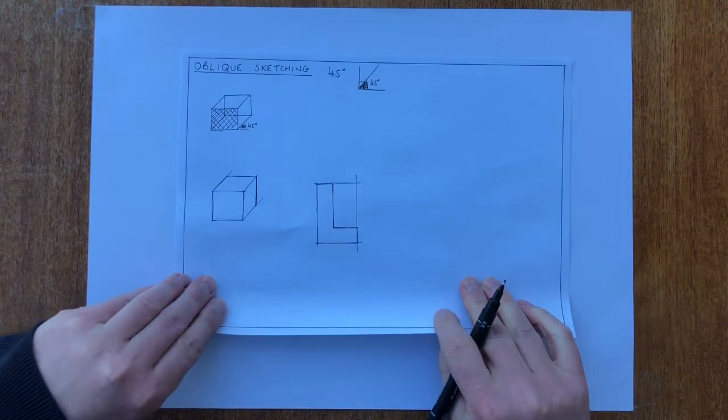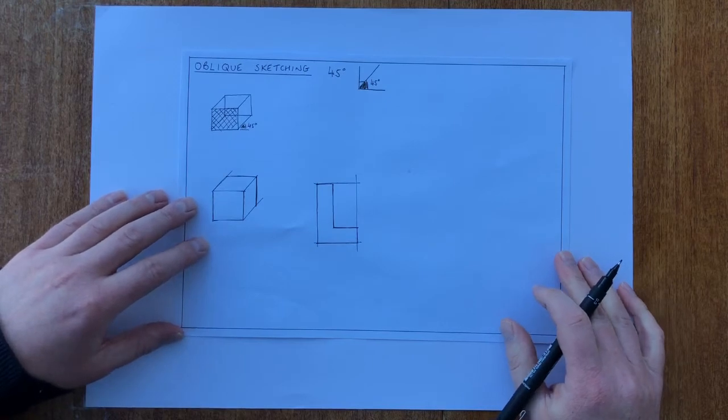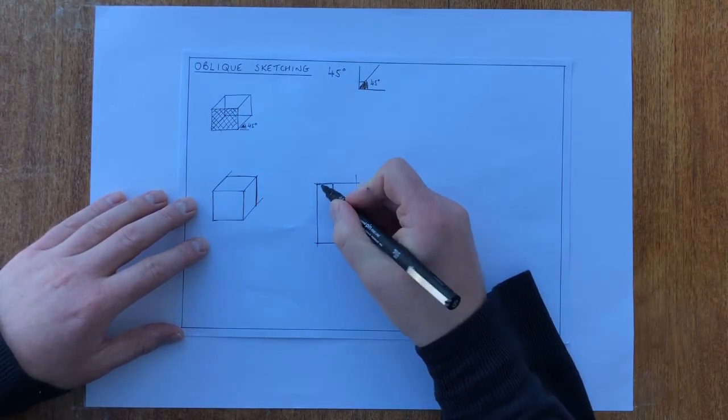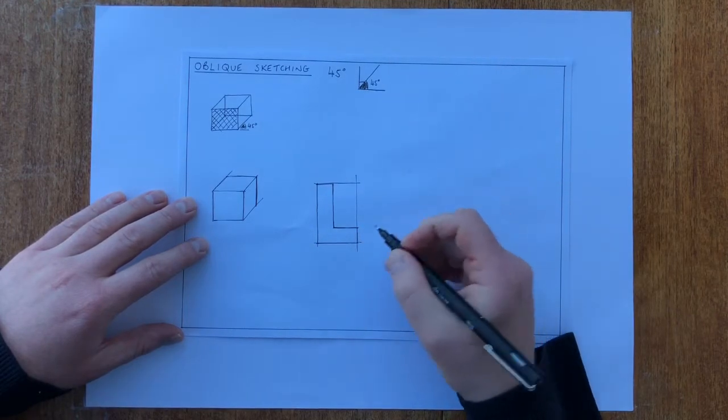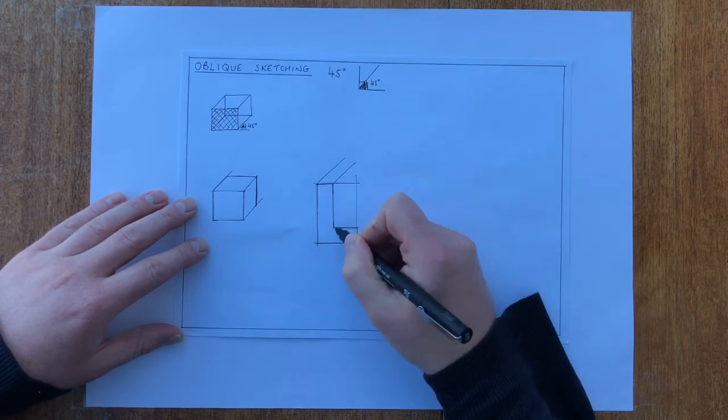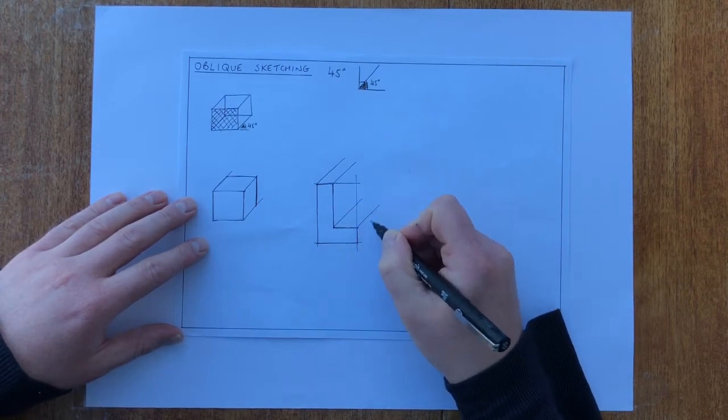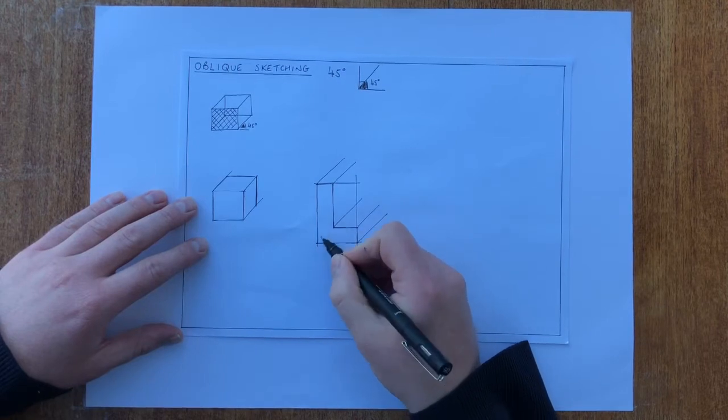There you go. To make it into an oblique 3D drawing, I'm going to go to this corner point, this corner point, this corner point, and this corner point, and this corner point, and take lines back at 45 degrees. I'm not going to take a line from this point because I won't see it through the drawing.